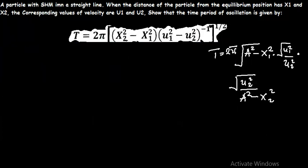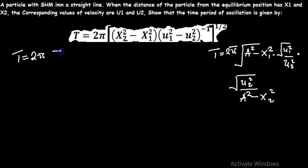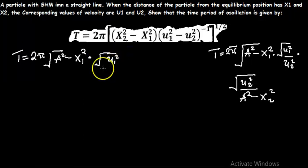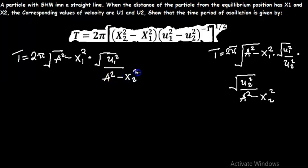Next, we combine the square roots. This gives us the time period T equals 2π times the square root of (A squared minus x1 squared) times v1 squared, divided by (A squared minus x2 squared). Finally, we substitute A squared minus x1 squared from the earlier expression.